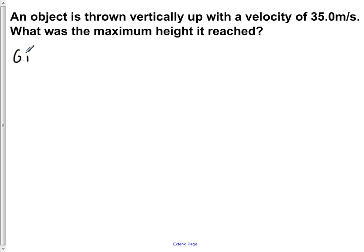We're going to write down our given information. We know that we have an initial velocity of 35 meters per second. We know the acceleration acting upon it is negative 9.8 meters per second squared because the force of gravity is acting on it.